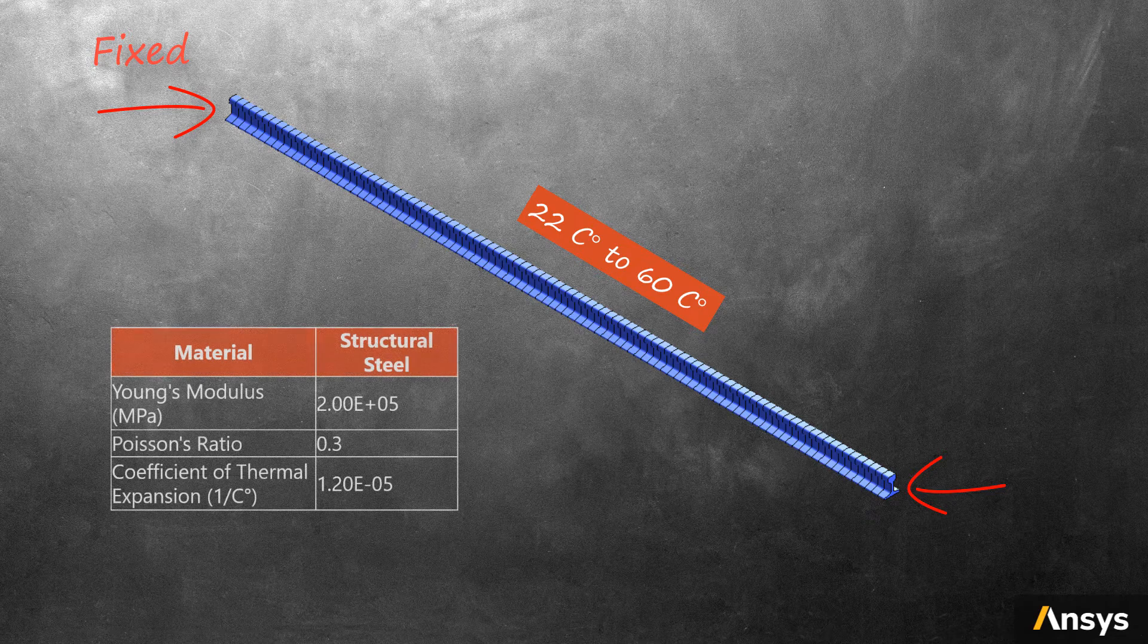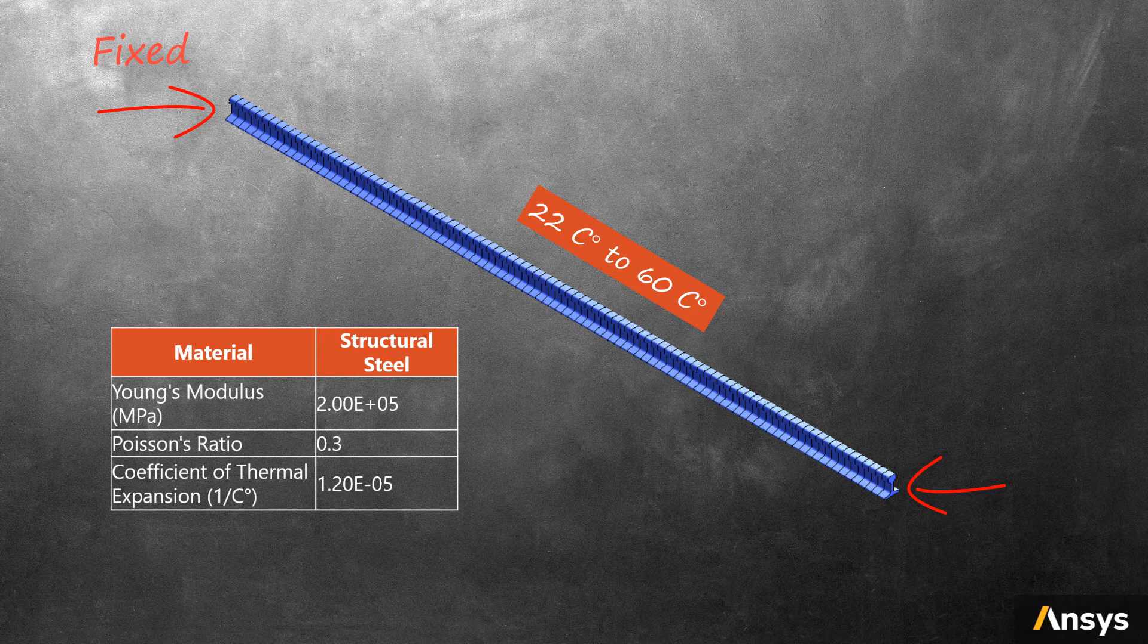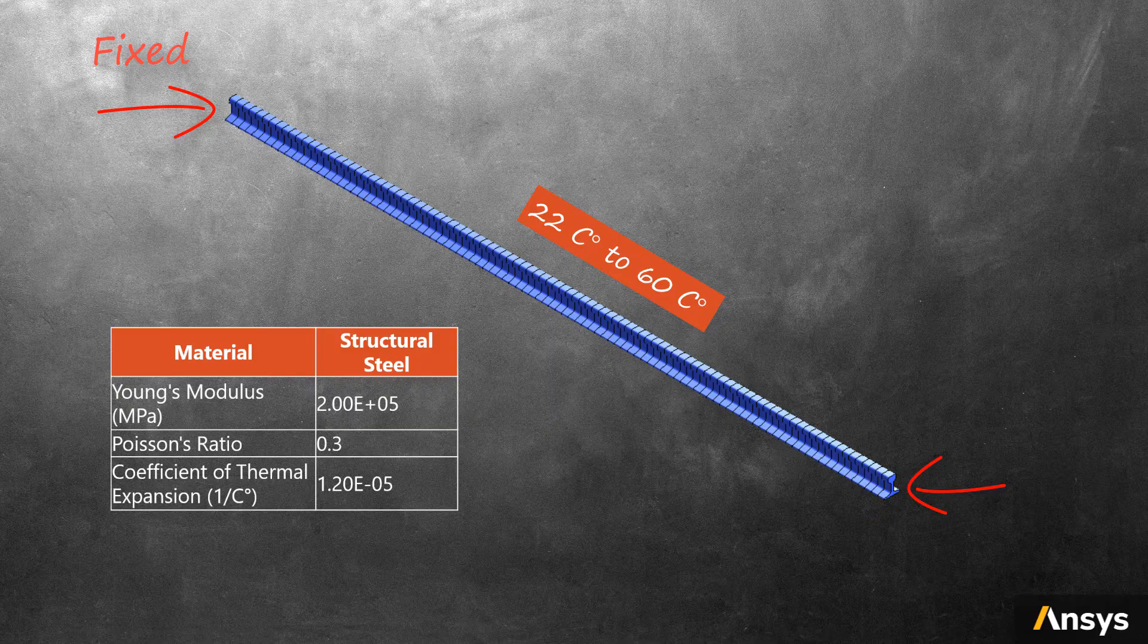The material used for the rail is elastic structural steel, whose coefficient of thermal expansion equals 1.2 times 10 to minus 5 inverse Celsius degrees.